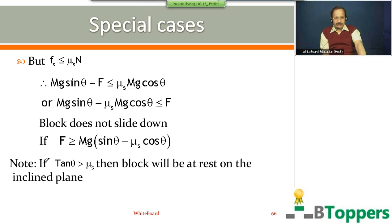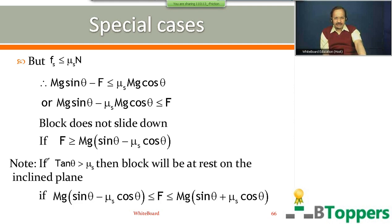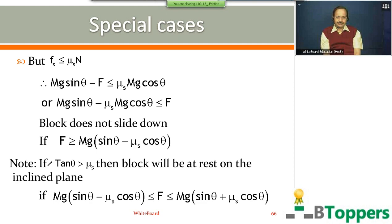So block does not slide down if F is greater than or equal to mg(sin θ − νs cos θ). If tan θ is greater than νs, the block will be at rest on the inclined plane if mg(sin θ − νs cos θ) is less than or equal to F, which is less than or equal to mg(sin θ + νs cos θ). This is the condition for the block to remain at rest on the inclined plane when force is applied parallel to the inclined surface up along the inclined plane.